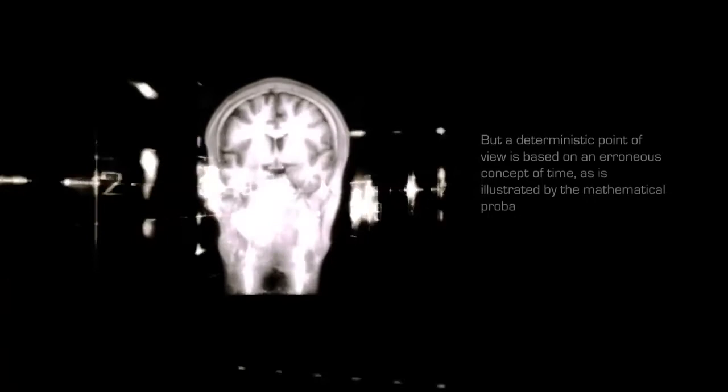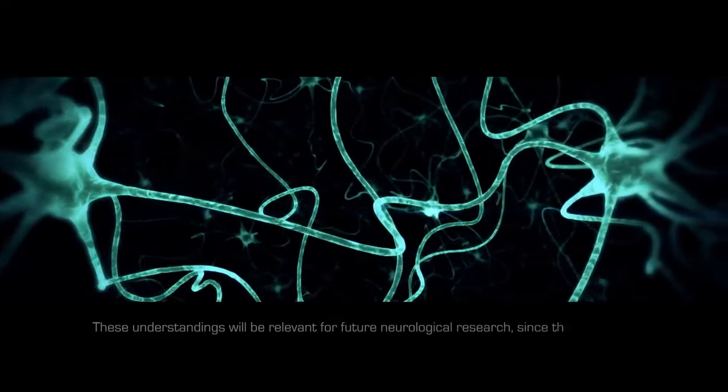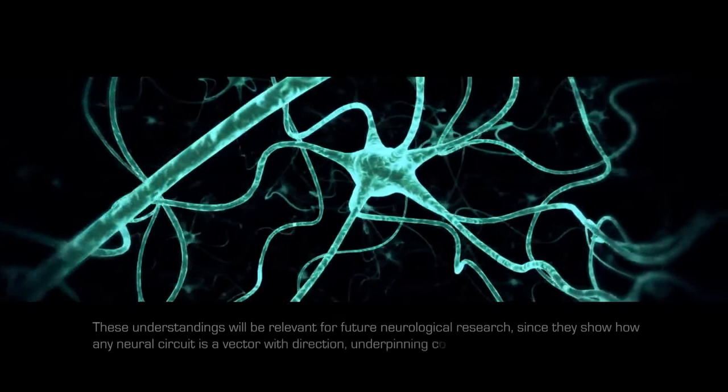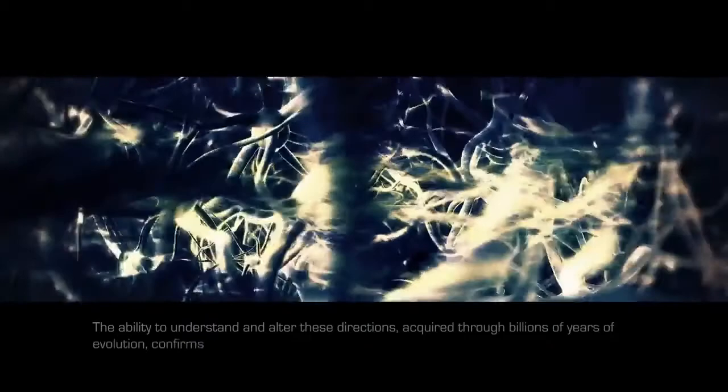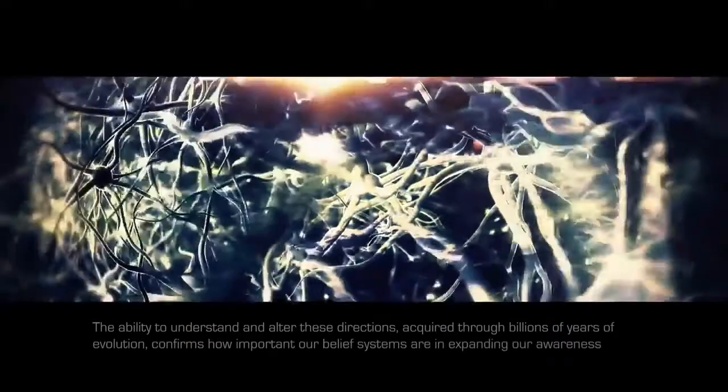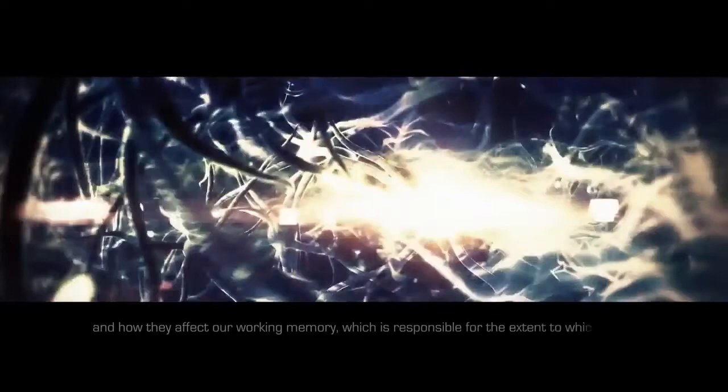These understandings will be relevant for future neurological research, since they show how any neural circuit is a vector with direction, underpinning cognitive dissonance and interference or resonance within C. The ability to understand and consciously alter these directions, acquired through billions of years of evolution, confirms how important our belief systems are in expanding our awareness, and how they affect our working memory, which is responsible for the extent to which we can make connections, and for the neural processes that create meaning.